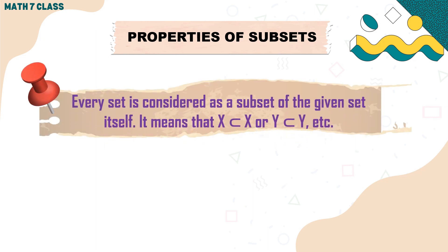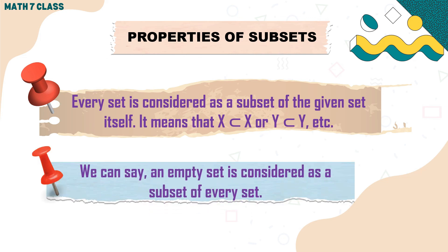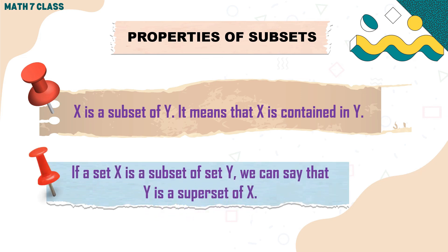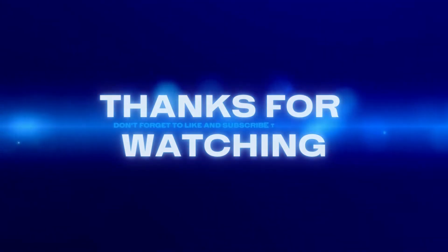Now let's discuss the properties of subsets. First, every set is considered as a subset of itself — for example, X is a subset of X, Y is a subset of Y. Second, an empty set is considered as a subset of every set. Third, if set X is a subset of set Y, it means that X is contained in Y, and we can say that Y is a superset of X. That's all for today — I hope you learned something about sets.